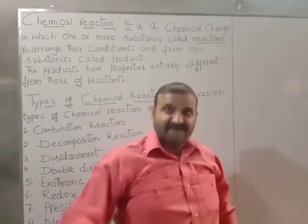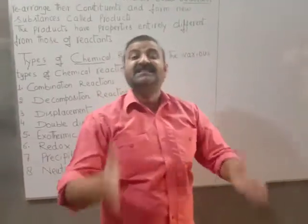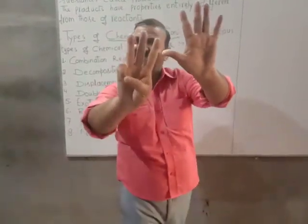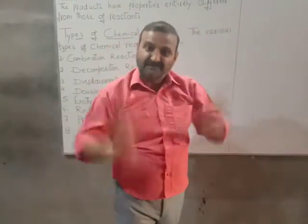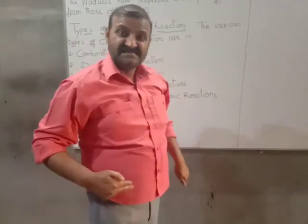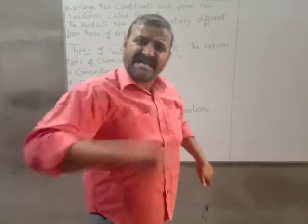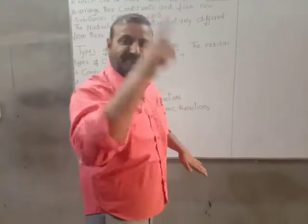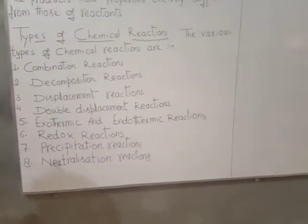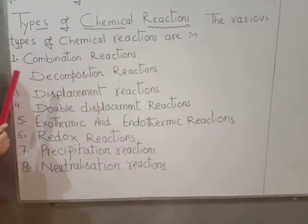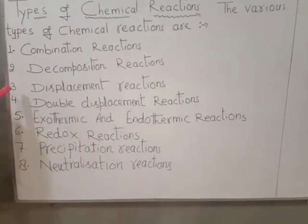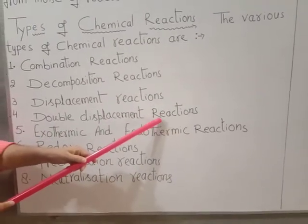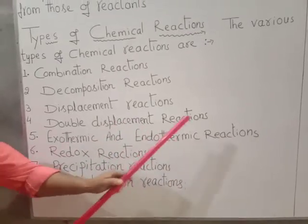Now students, we have various types of chemical reactions in this Class 10 chapter. We need to understand eight different types. Focus at the board. These reactions are: number one, combination reactions; number two, decomposition reactions; number three, displacement reactions; number four, double displacement reactions; and number five, exothermic and endothermic reactions.